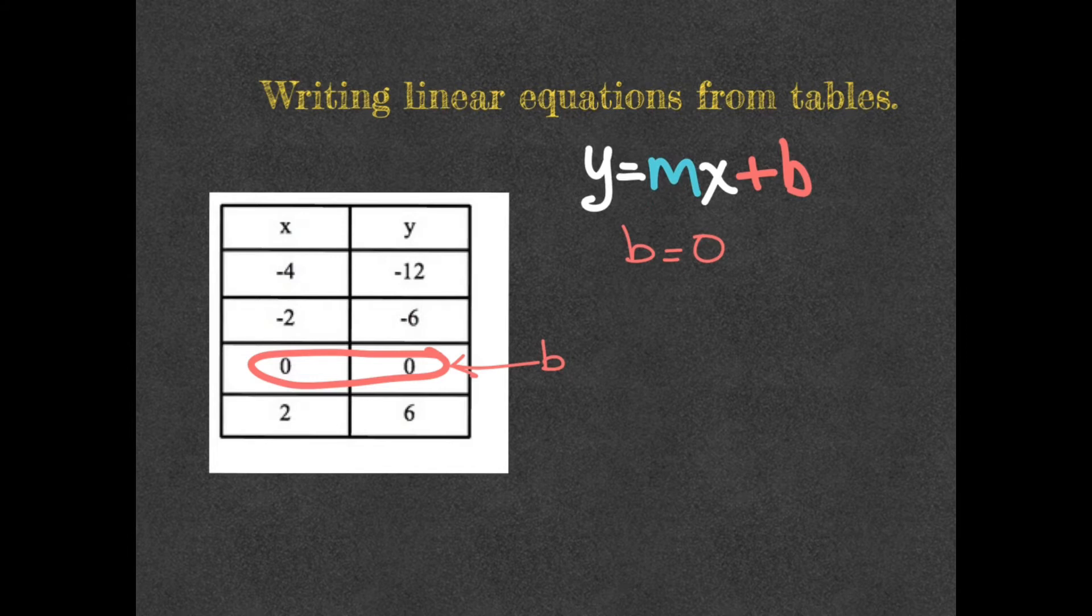The way that we find slope in a table is going to be change of y over change of x. So we're going to start by looking for the change of y. And all that we have to do is look at here.